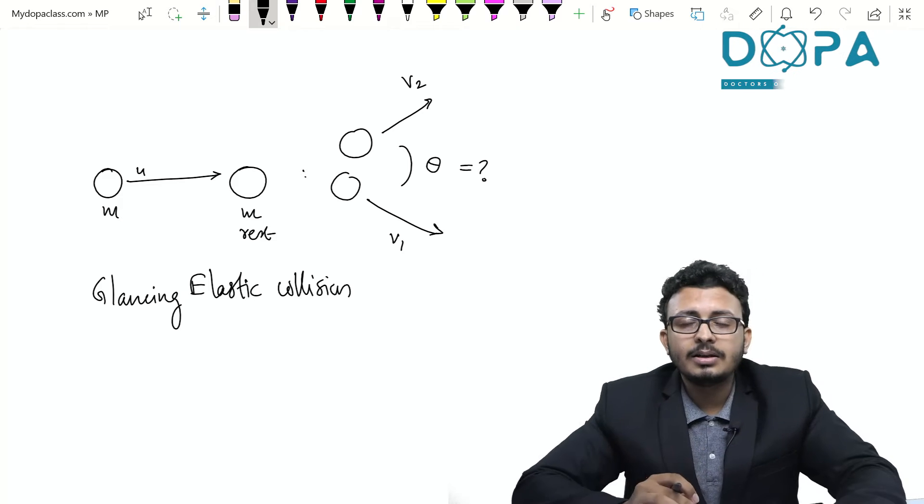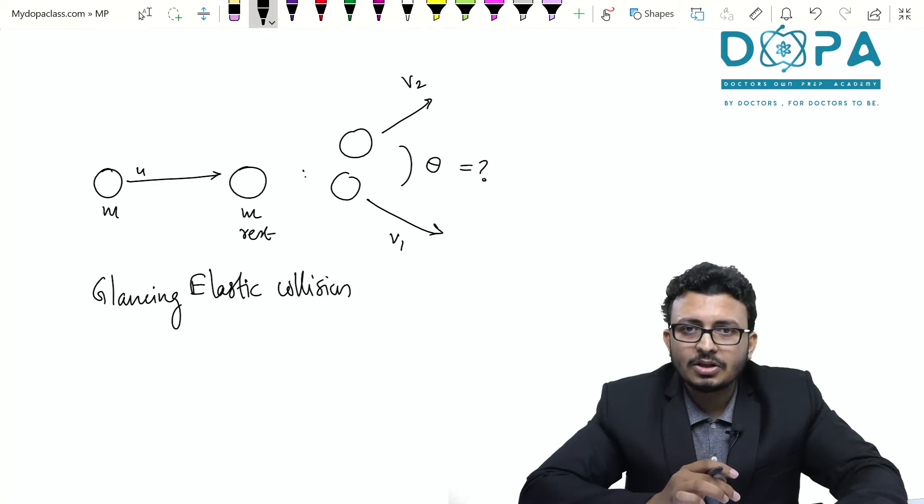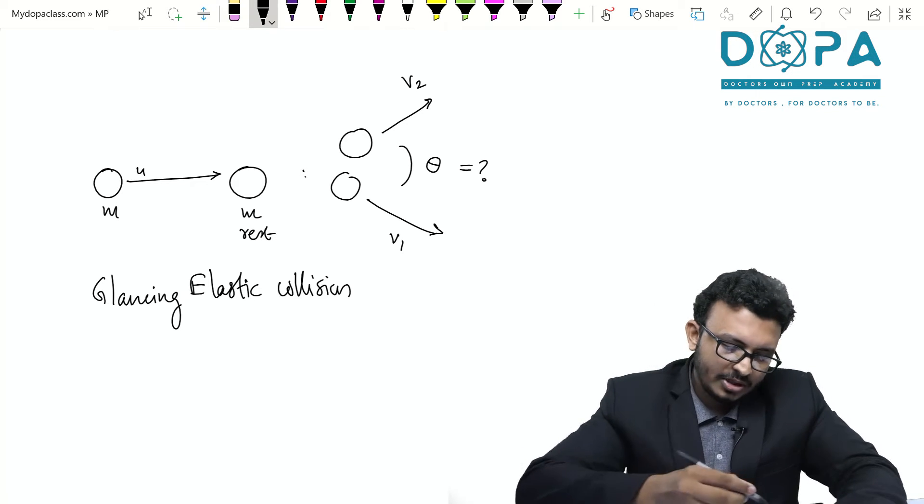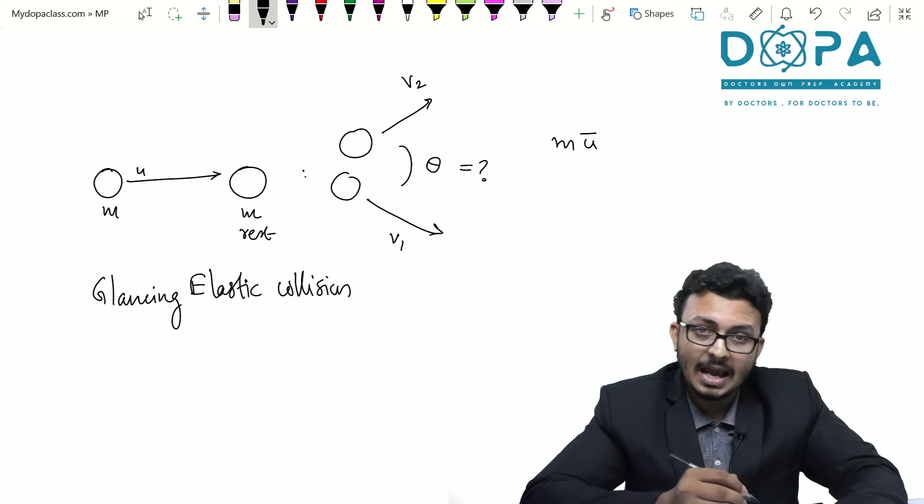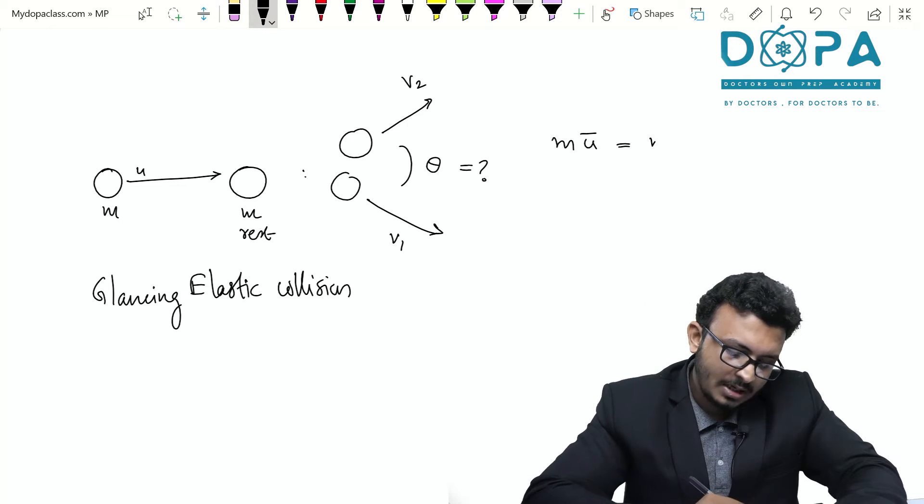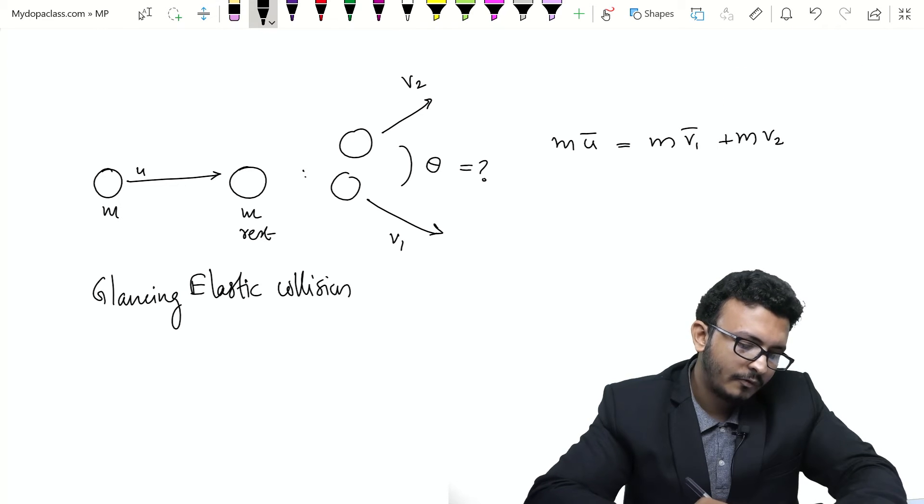So the idea here is we have a glancing elastic collision. It's an elastic collision. That means the momentum has to be conserved. So the momentum before collision is MU. It's a vector. Must be equal to the momentum after collision MV1 plus MV2.